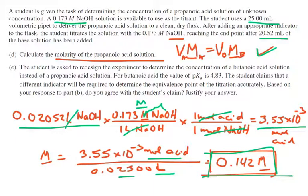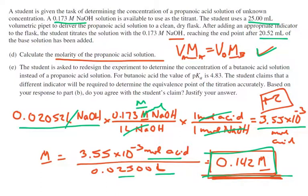Part D is worth two points. If the reader sees the final answer of 0.0142 molar, you get both points. If you don't reach the final answer but at least calculated the number of moles of acid — 3.55 times 10 to the minus 3 moles — you can earn one of the two points.